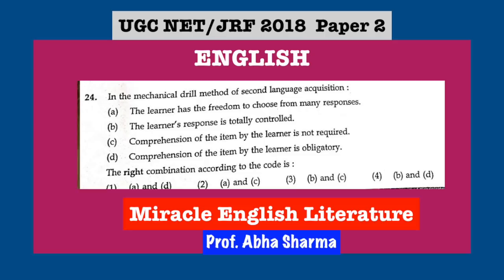Question number 24: In the mechanical drill method of second language acquisition, when you are mechanically cramming sentences, what happens? The learner has no freedom to choose from many responses — the learner's response is totally controlled. If he has to say yes, he says just yes. The drills are very mechanical in nature. Also, comprehension of the item by the learner is not required in drills — they do not understand meanings, they don't comprehend, and they are not given choices to respond. The correct answer is B and C.